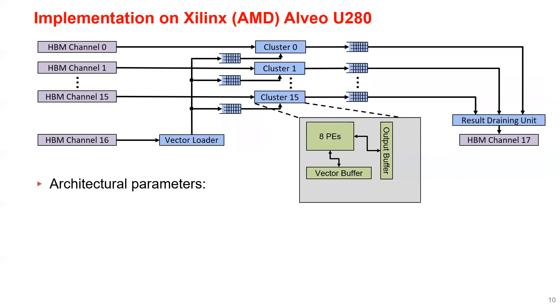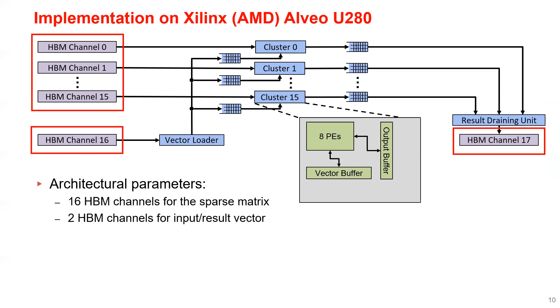Okay, let's move on to the implementation. We implemented HiSparse on a Xilinx VU280 FPGA with 16 HBM channels for the sparse matrix, 2 HBM channels for the input and result vector. So these 18 HBM channels give us a total bandwidth of 258 gigabytes per second.